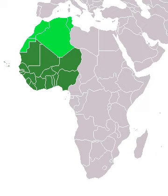Britain controlled the Gambia, Sierra Leone, Ghana, and Nigeria throughout the colonial era, while France unified Senegal, Guinea, Mali, Burkina Faso, Benin, Ivory Coast and Niger into French West Africa. Portugal founded the colony of Guinea-Bissau, while Germany claimed Togoland, but was forced to divide it between France and Britain following the First World War due to the Treaty of Versailles. Only Liberia retained its independence, at the price of major territorial concessions.